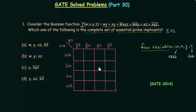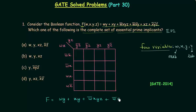I will quickly draw the 16-cell K-map, then we will find out the essential prime implicants. After making the K-map, I will fill it using the logic expression given in the problem. The function f is equal to: w·y + x·y + w'·x·y·z + w'·x'·y + x·z + x'·y'·z'.